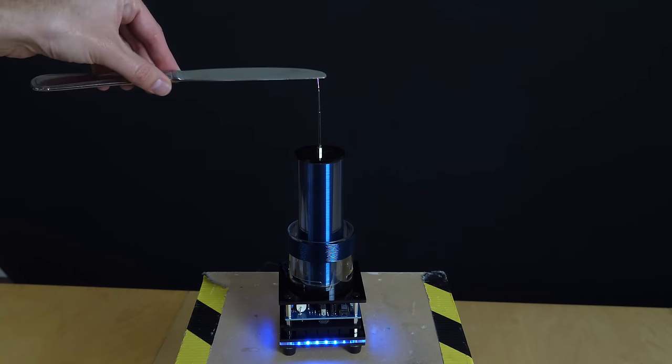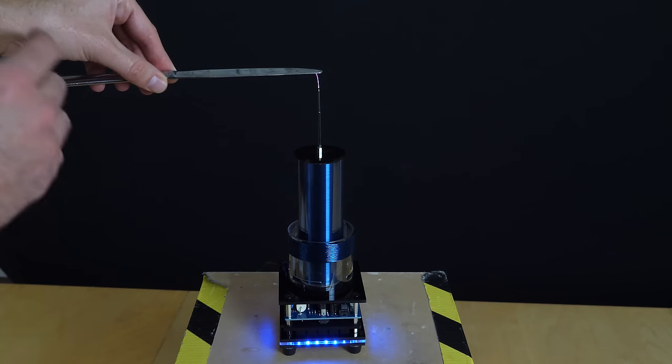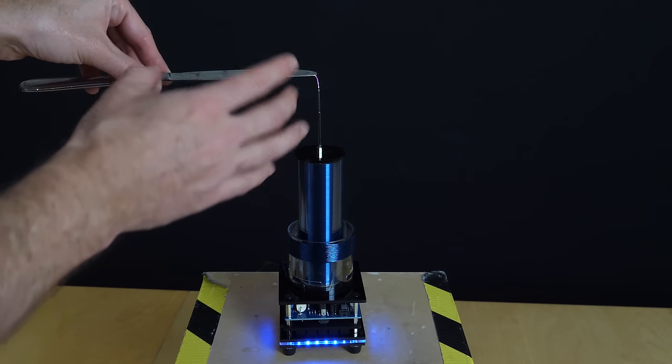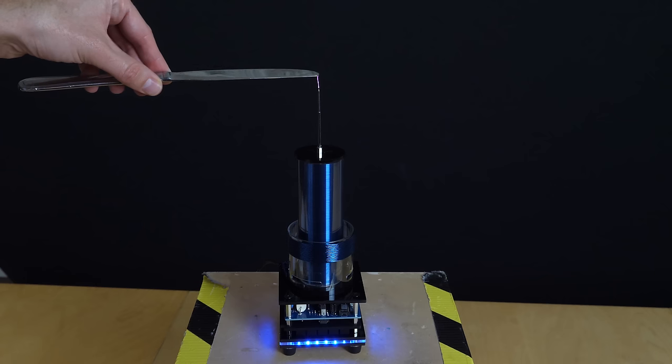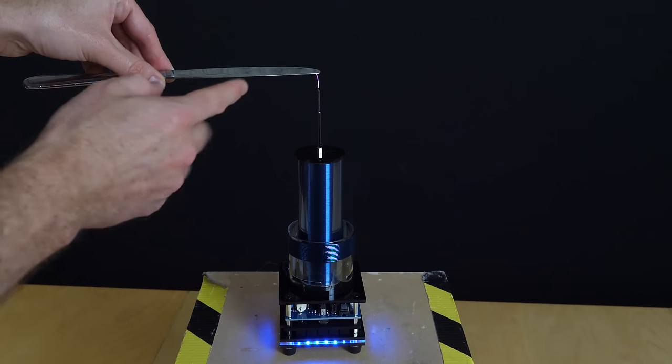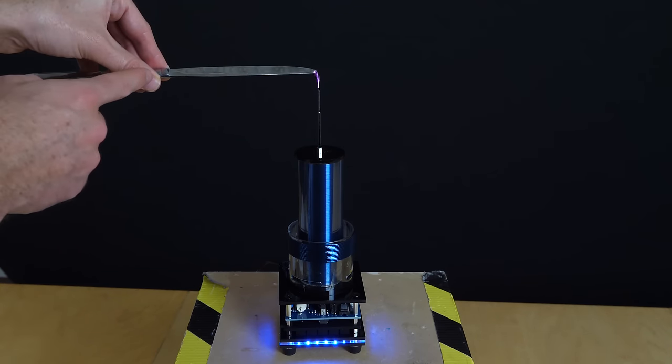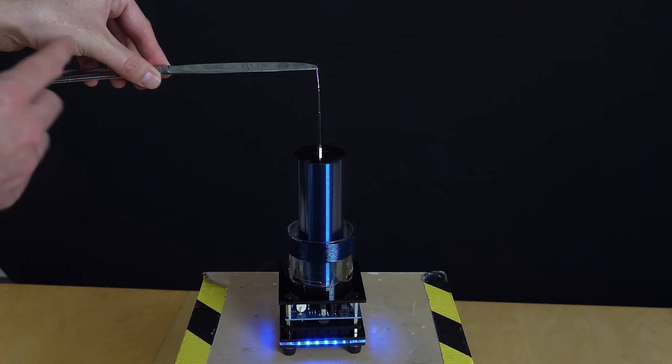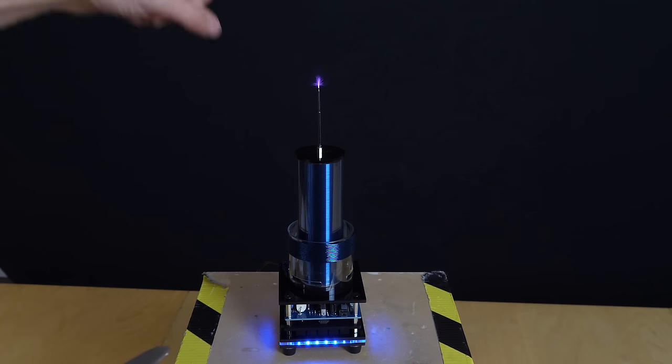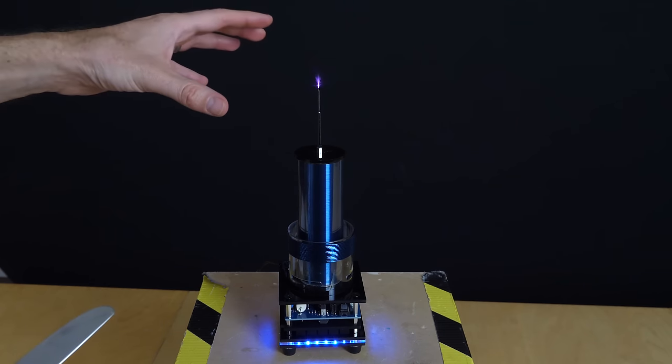This is called the skin effect. Whenever there's a transfer of current at high frequencies, it only travels on the skin of the conductor. And so in this case, the knife and me are the conductor. And so it's traveling only on my skin. And so I don't feel the electrons going through me. I don't feel the electric shock. Now it will still burn me, so I can't touch it for long, but it doesn't shock me.